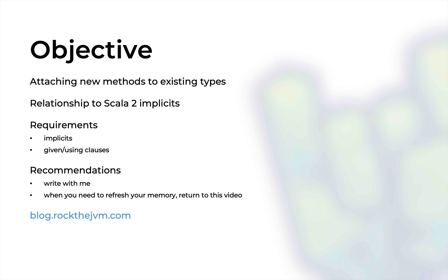We're also going to discuss the relationship between this mechanism and the old Scala 2 implicits mechanism. For that we will need to know how implicits work and how given and using clauses work in Scala 3. We already have a bunch of videos here on the Rock the JVM channel discussing how to use given and using clauses and how they compare to the old implicits mechanism.